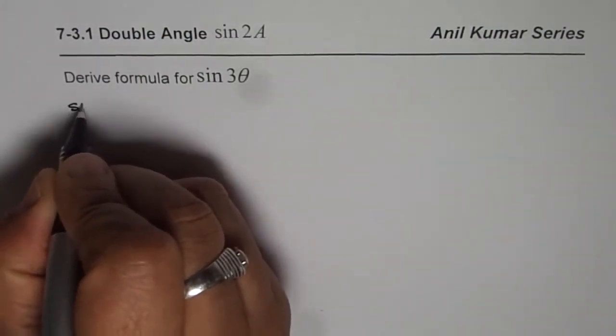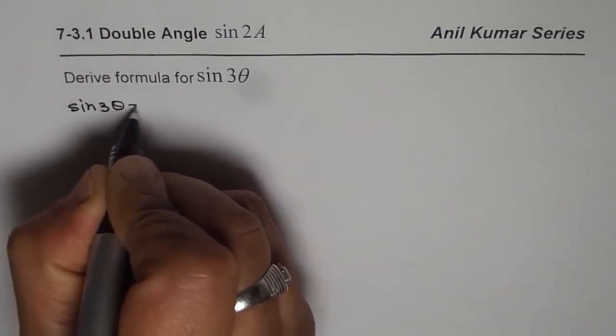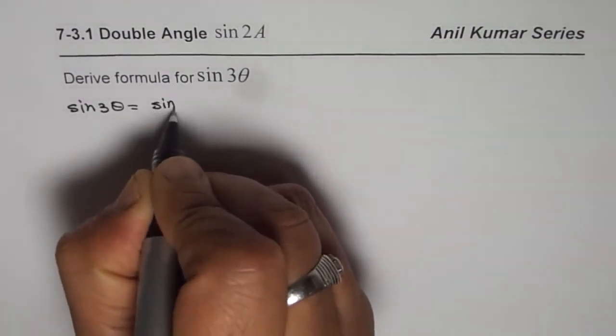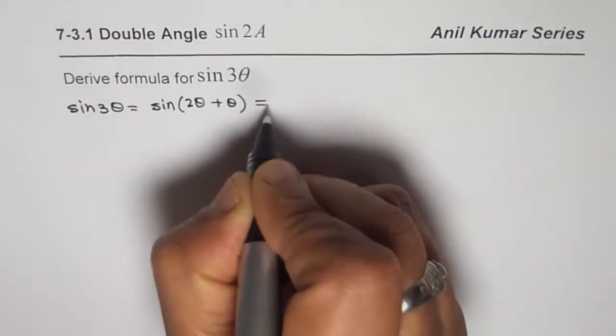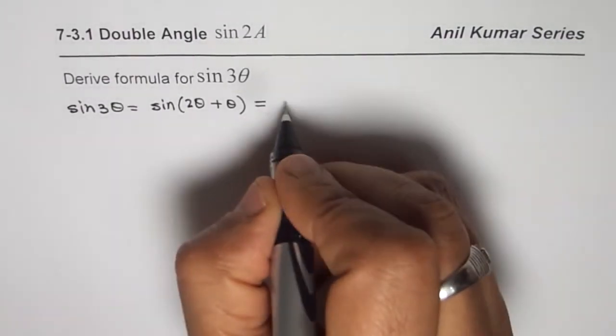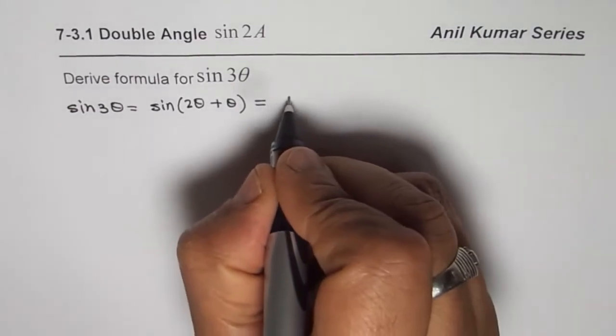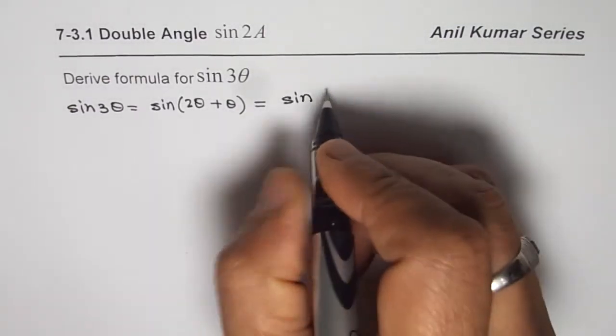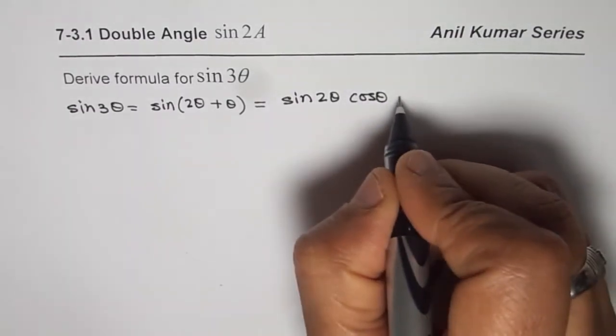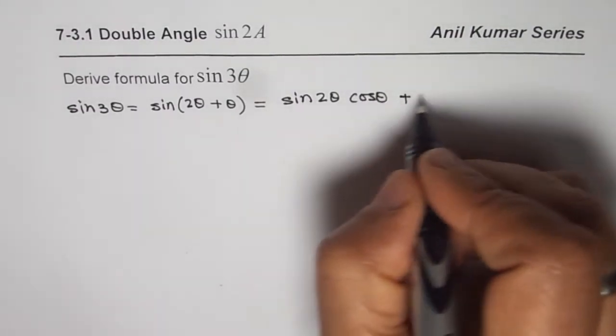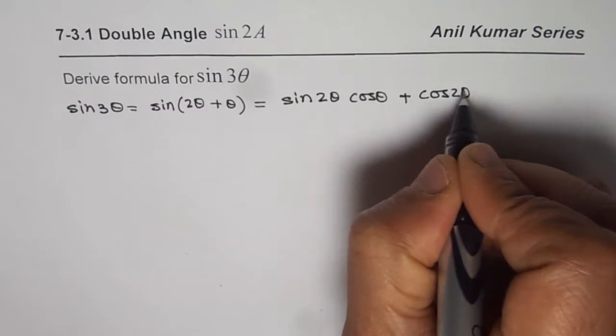Now sin 3θ could be written as sin(2θ + θ). Using the compound angle formula, we can write this as sin 2θ cos θ plus cos 2θ sin θ.